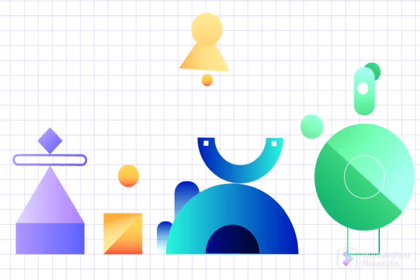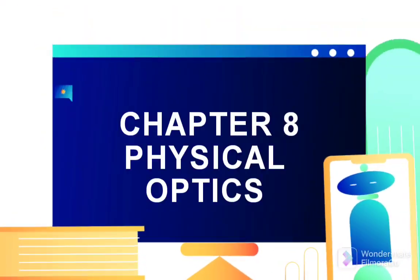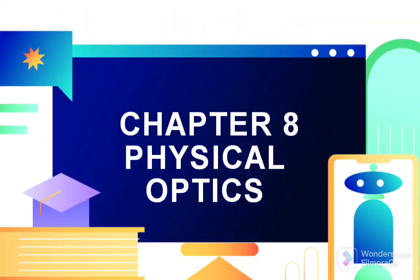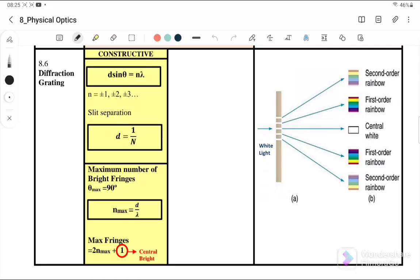Hello, welcome back to my channel. Today we will learn Chapter 8: Physical Optics. In this video we are going to continue discussing the subtopic 8.6: Diffraction Grating. Before we go through the examples, we will first go through the summary for diffraction grating.